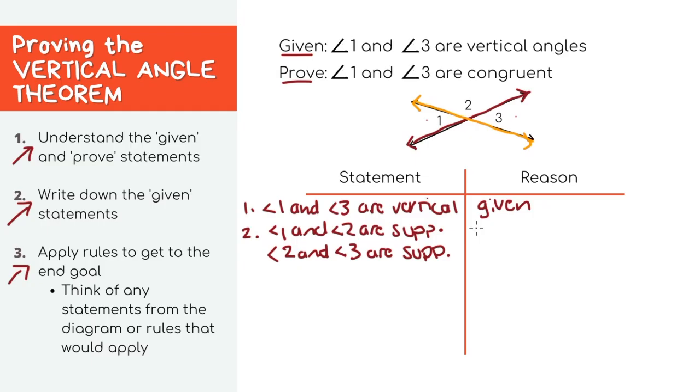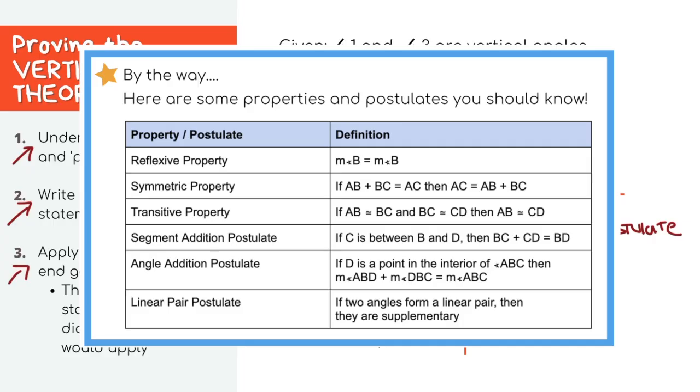For the reason you can say we're using the linear pair postulate that just says two angles along the same line are supplementary.